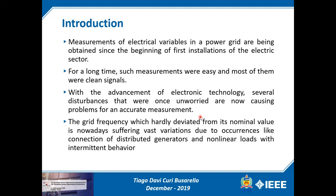Introduction. Measurements of electrical variables in the power grid are being obtained since the beginning of the first installations of the electrical sector. Initially and for a long time, these measurements were easy to measure and most of them were clean signals. But with the advancement of electronic technology, the introduction of distributed generators and a lot of non-linear loads, several disturbances that were once unnoticed are now causing problems for accurate measurement. And the grid frequency, which hardly deviated from its nominal value, is nowadays suffering vast variations due to these occurrences.